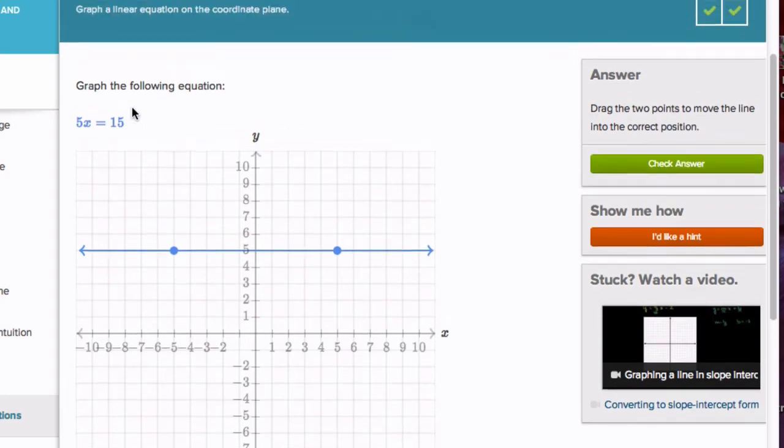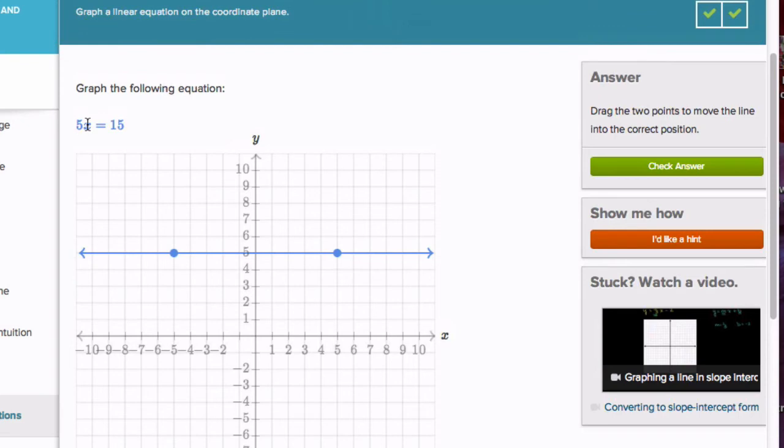In these types of equations right here, it's basically the same idea, except I want to isolate x. x is 3, right? Divide both sides by 5, you see x is 3. So we need a line where all the points on the line have an x value of 3.